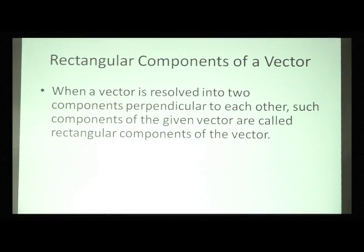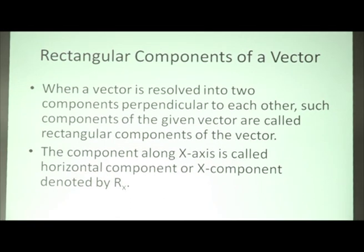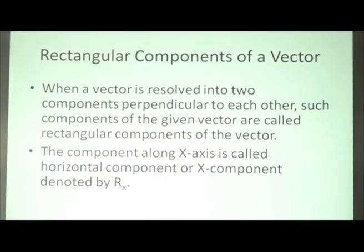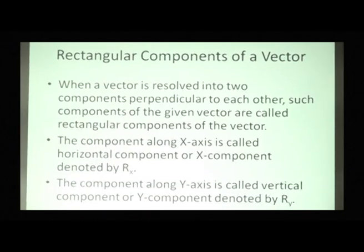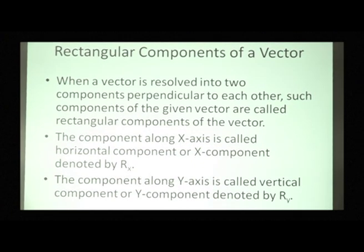When a vector is resolved into two components perpendicular to each other, such components are called rectangular components or perpendicular components of a vector. The component along the x-axis is called the x-component or horizontal component of the vector, and it is denoted by rx. The component along the y-axis is called the y-component or vertical component of the given vector, and it is denoted by ry.